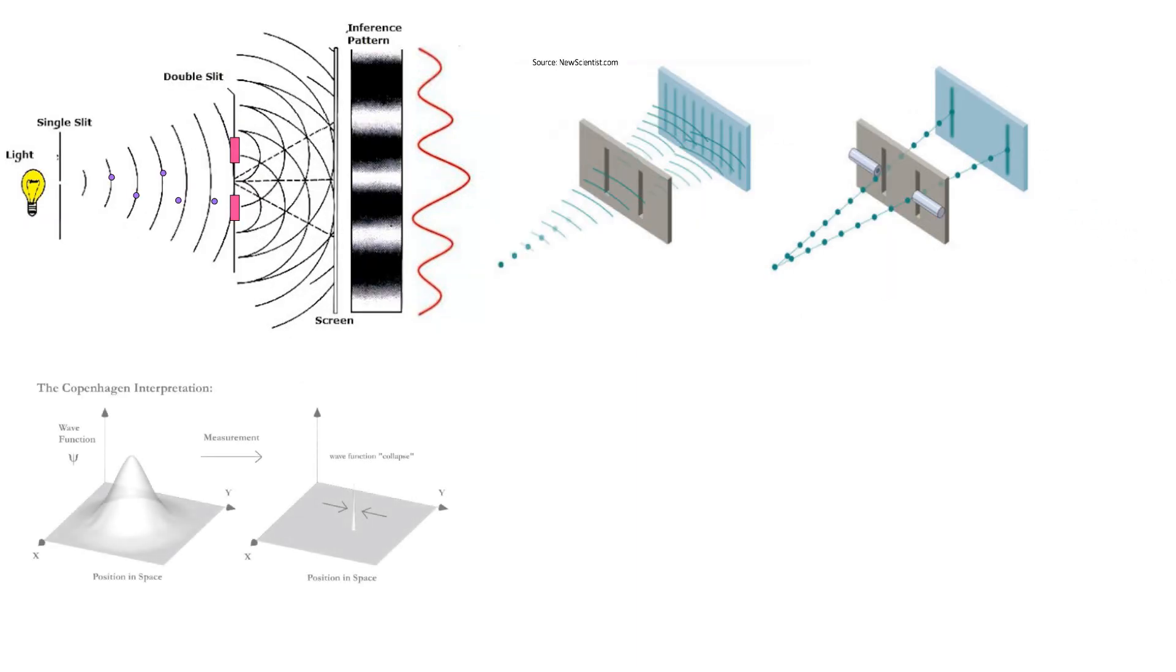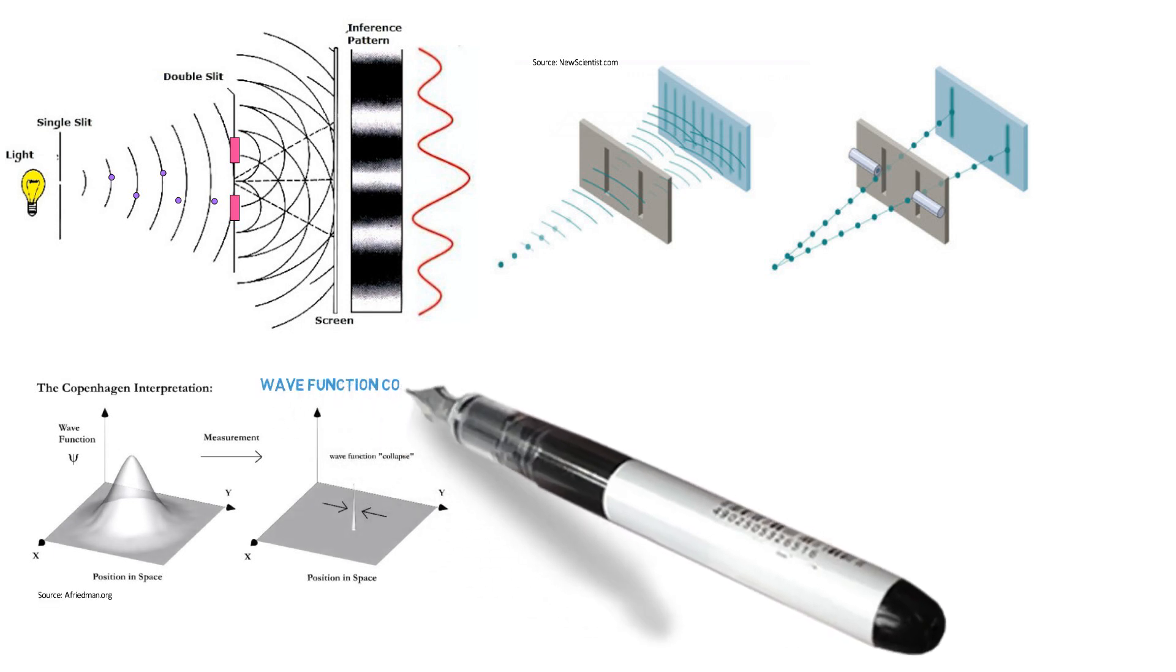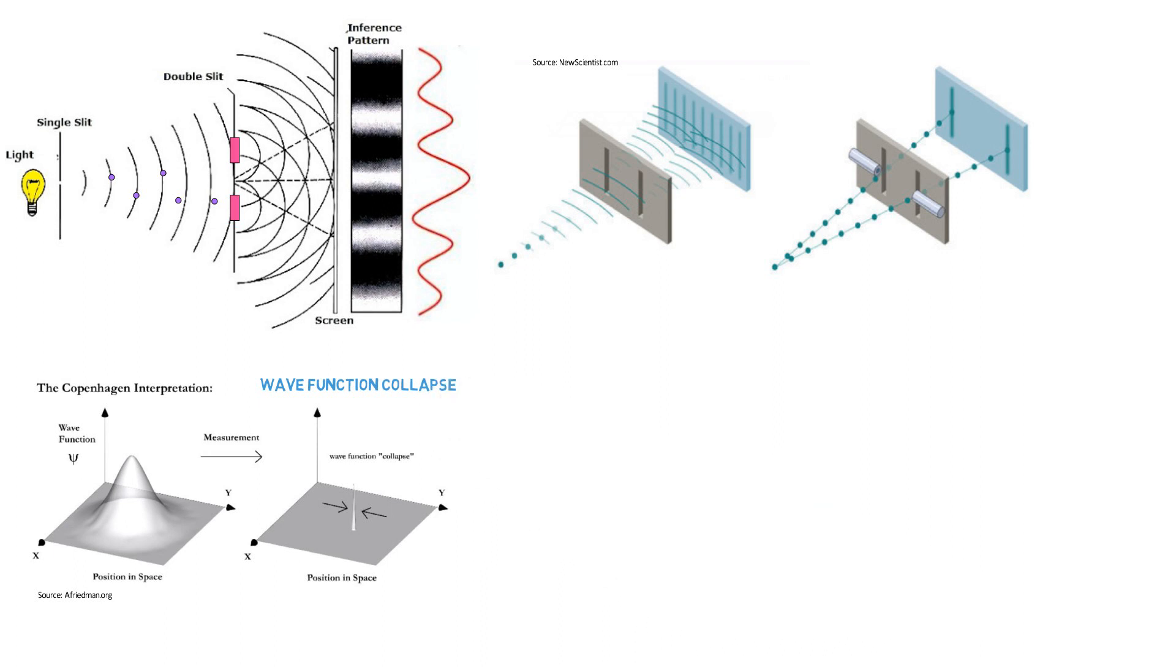There are different theories to explain why this would happen, and the most famous one is the Copenhagen interpretation of the wave function collapse. What it's saying is that by putting a sensor there, you're changing the nature of the wave function. So originally, it did not have a physical nature. It was just pure possibility. But the moment you try to observe or measure it, it collapses into a concrete physical form.